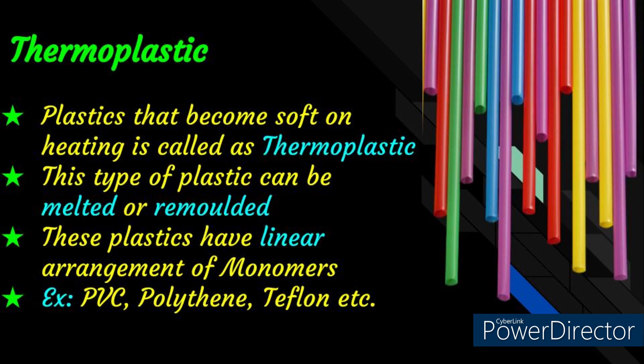Thermoplastics are the type of plastic that becomes soft on heating and they can be melted and reshaped again and again. These plastics have a linear arrangement of monomers and can be easily moulded when hot and regain their properties on cooling. Examples of thermoplastics are Polyvinyl chloride (PVC), polythene, teflon, etc.